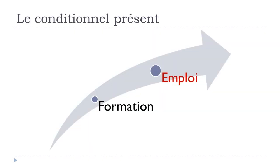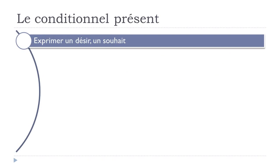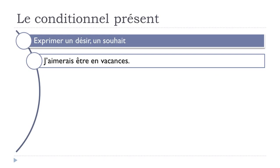Now let's see when we should use the Conditionnel Présent — that's the most important part. The first situation is to express a desire or a wish — exprimer un désir ou un souhait. For example: J'aimerais être en vacances — I would like to be on holiday.